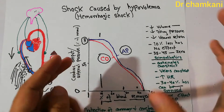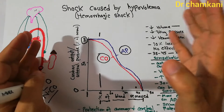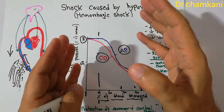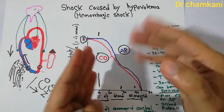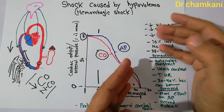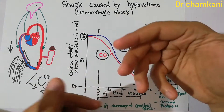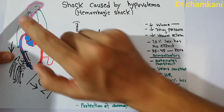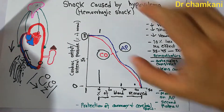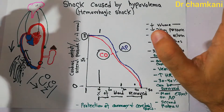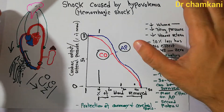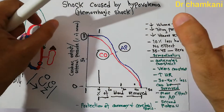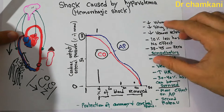Blood loss as high as 30 to 40% — nearly half the blood — can be survived due to these compensatory mechanisms. This is the advantage of the sympathetic system along with other systems, some of which have been discussed previously and some of which will be discussed in coming chapters.